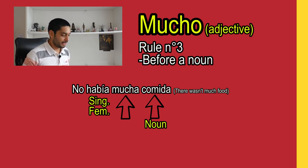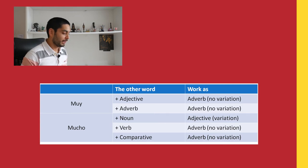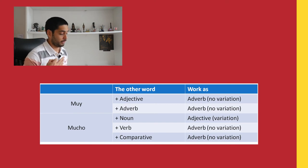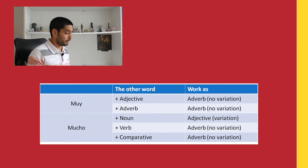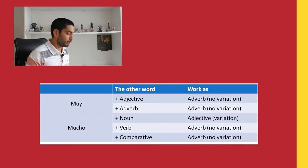It's not that hard when you analyze and know about the different types of words. Now, summarizing, let's see this final diagram. Muy is always an adverb, so it never has any variation — use it before an adjective or another adverb. Mucho can be either an adverb or an adjective: before a noun it varies by gender and number; after a verb or comparative word it's invariable and works as an adverb.